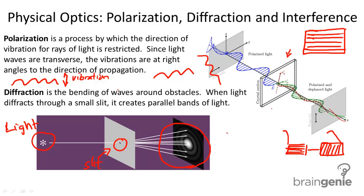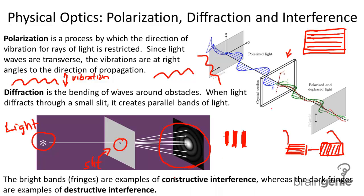If we look at these parallel bands of light, we have light, we have dark bands, and then we have light bands. They alternate between light and dark. The bright bands, or the fringes, which we call them, are examples of constructive interference. That's where the two light waves meet and combine their amplitudes.